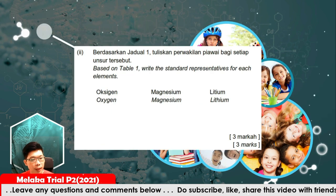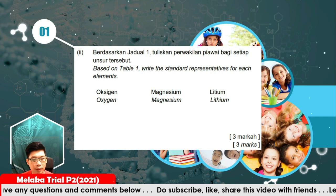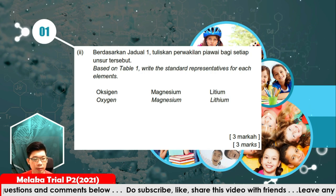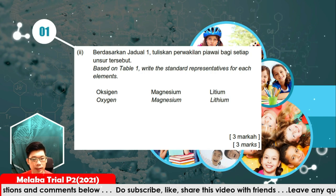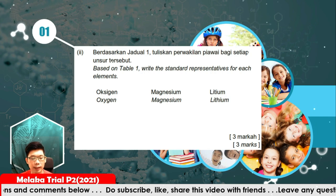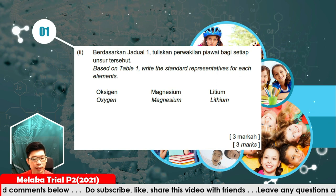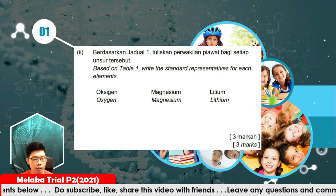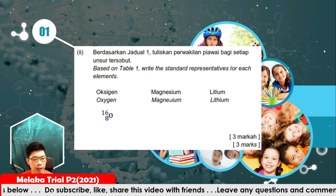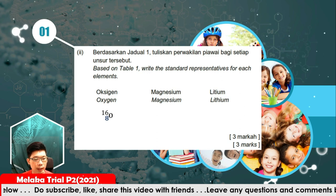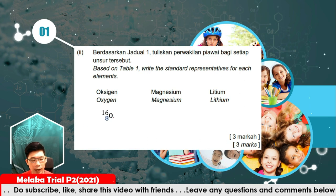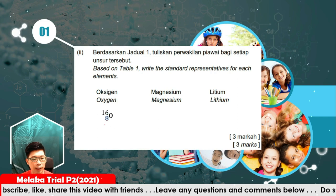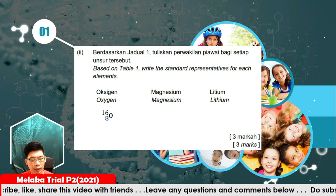Now, based on the table, write the standard representation for each of the elements — oxygen, magnesium and lithium. The standard representation for oxygen will be O. O is the name of the element. 16 is the nucleon number, and 8 is the proton number.